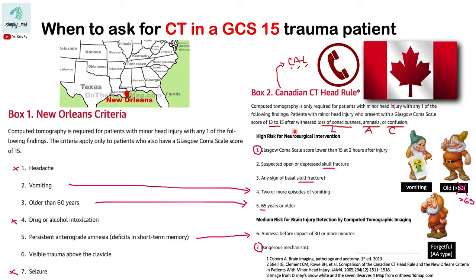For patients presenting with a GCS of 2 to 15, according to this criteria, CT is warranted if you have CALL Canada: Confusion, Amnesia, and Loss of consciousness.